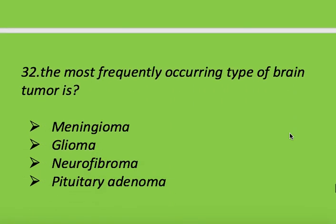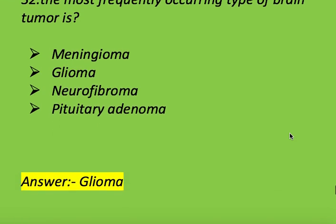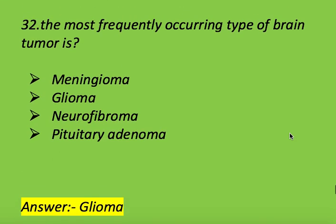Next question: what is the most frequently occurring type of brain tumor? Options: meningioma, glioma, neurofibroma, and pituitary adenoma. Right answer is glioma. Glioma is the most frequently occurring type of brain tumor.